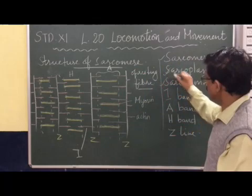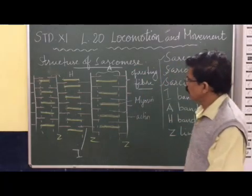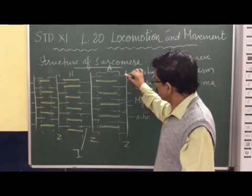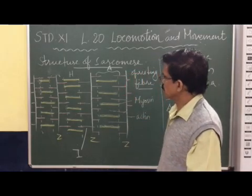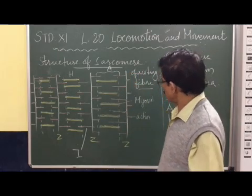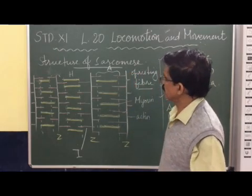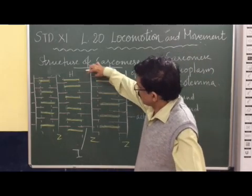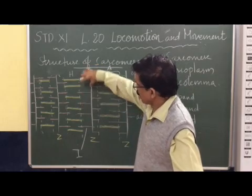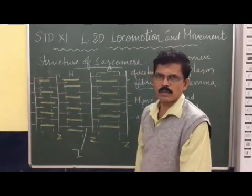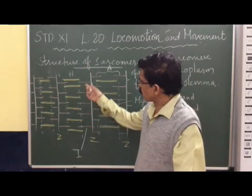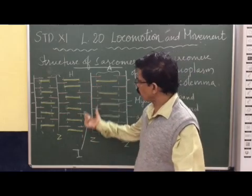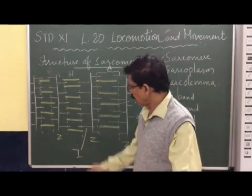Inside the sarcomere we can see an arrangement of actin and myosin. The first region is the I-band. What is the I-band? The I-band represents the actin-only region — the active part only — on either sides of the sarcomere. The I-band runs through the Z-line and contains only actin.